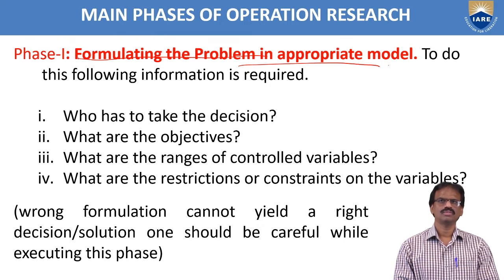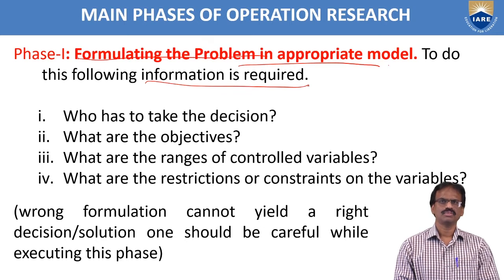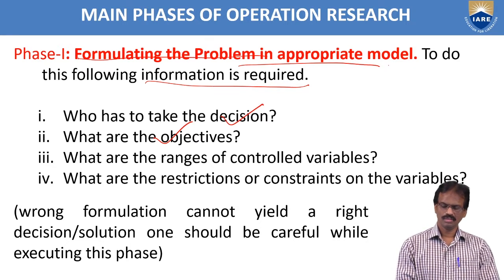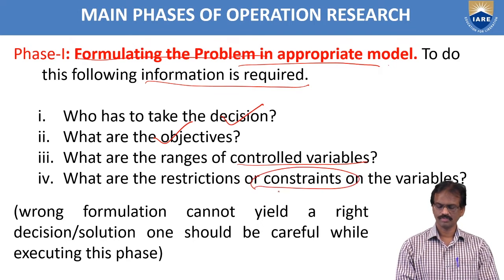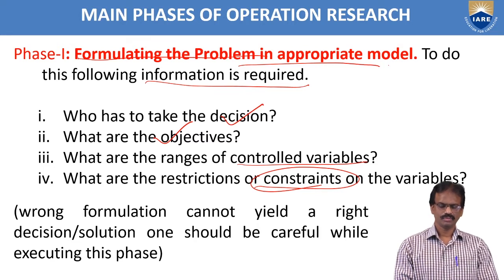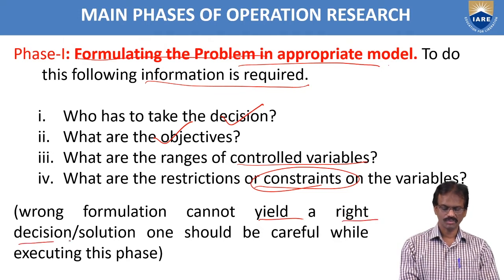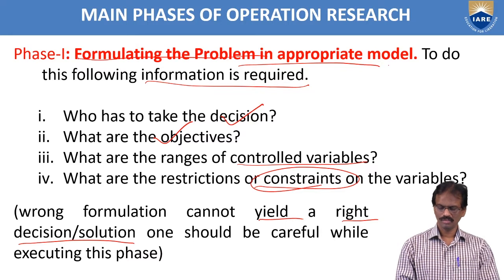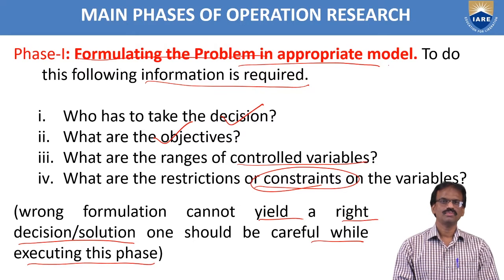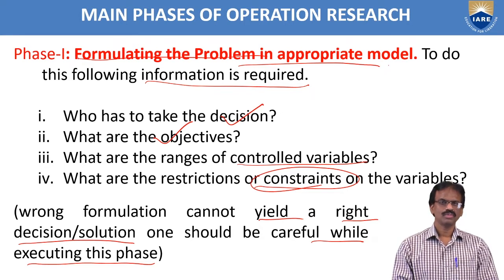To do this, you have to follow some requirements. The following information is required: first, who has to take the decision; next, what are the objectives; next, what are the ranges of controlled variables; and next, what are the restrictions or constraints on the variables. Wrong formulation cannot yield a right decision or solution, so one should be careful while executing this phase. Formulation of any model of real world problems is very important, because wrong formulation leads to wrong objectives.